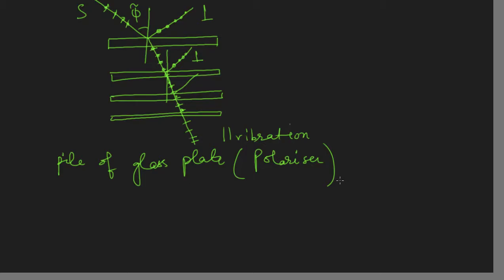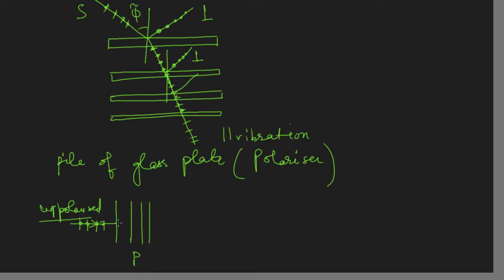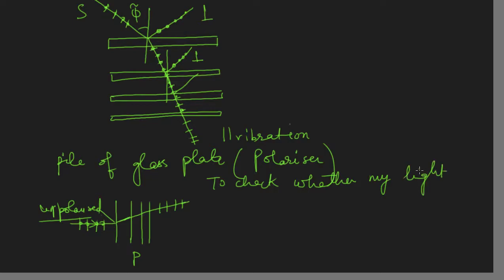More and more surfaces means more polarized light. Now I want to check whether my light is polarized or not. I can draw the pile of glass plates and term this as the polarizer. I am shining unpolarized light from here, which has both components. After passing through the pile of glass plates, my light is polarized having the parallel component. Now I want to check whether this light is polarized — what can I do? I can use this pile of glass plates again to check.